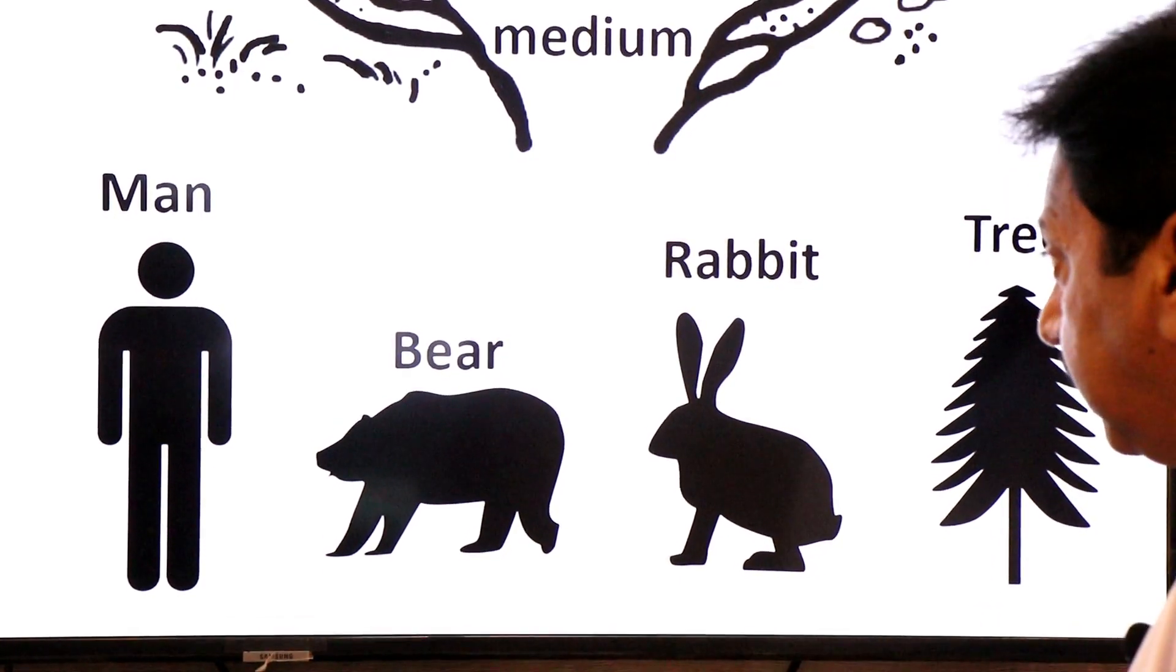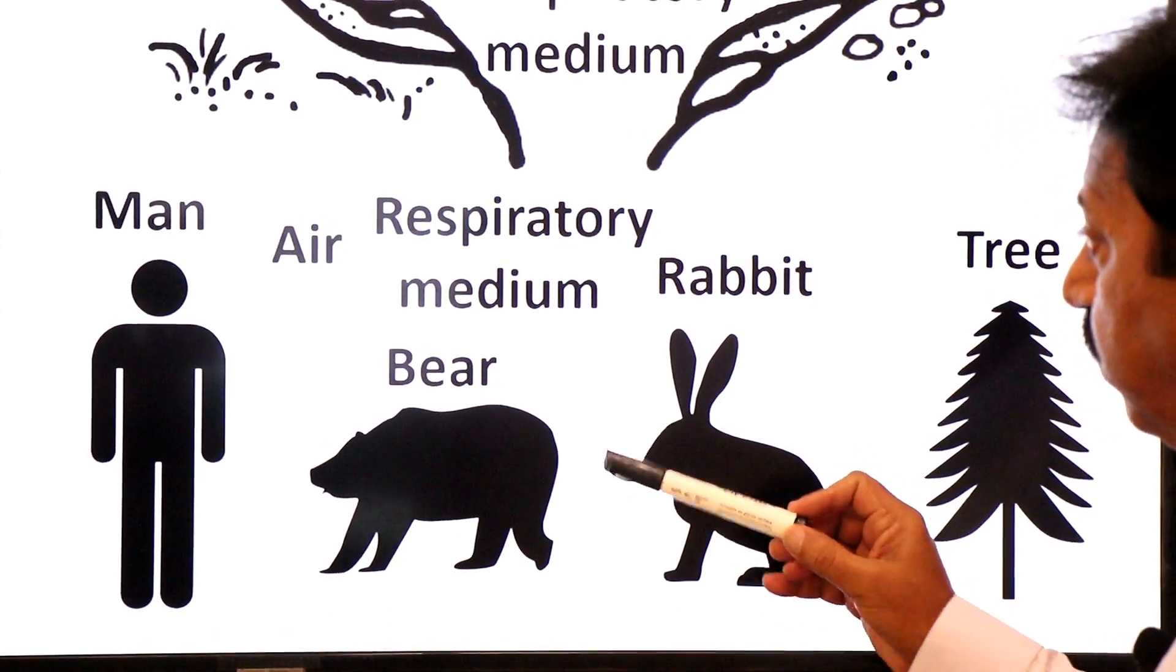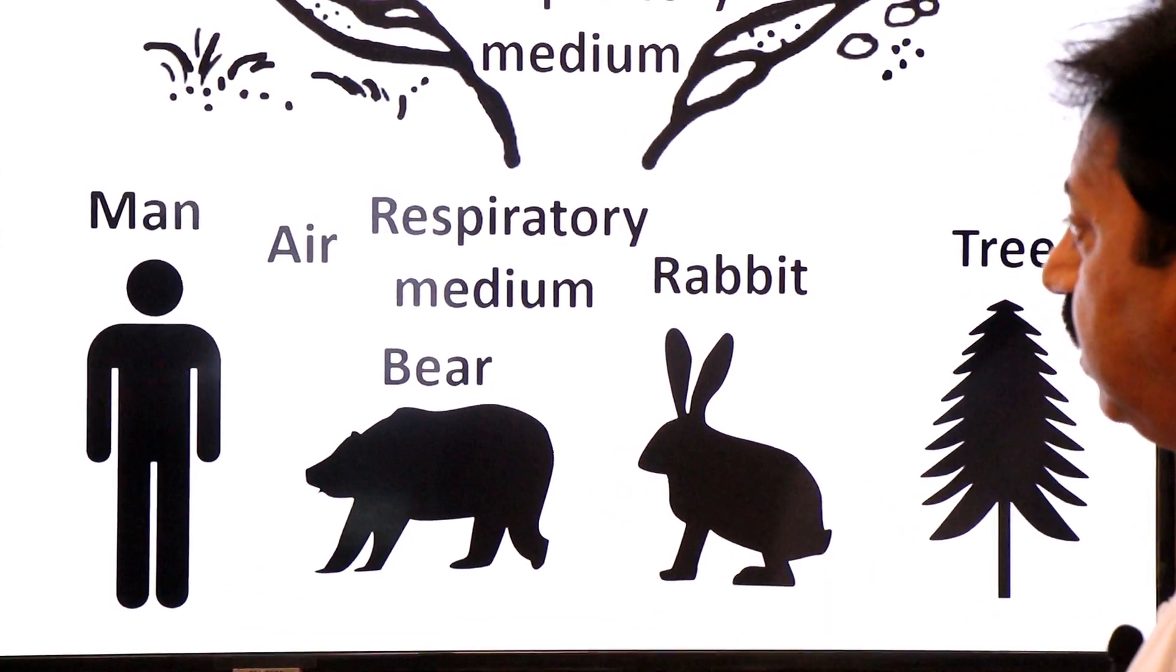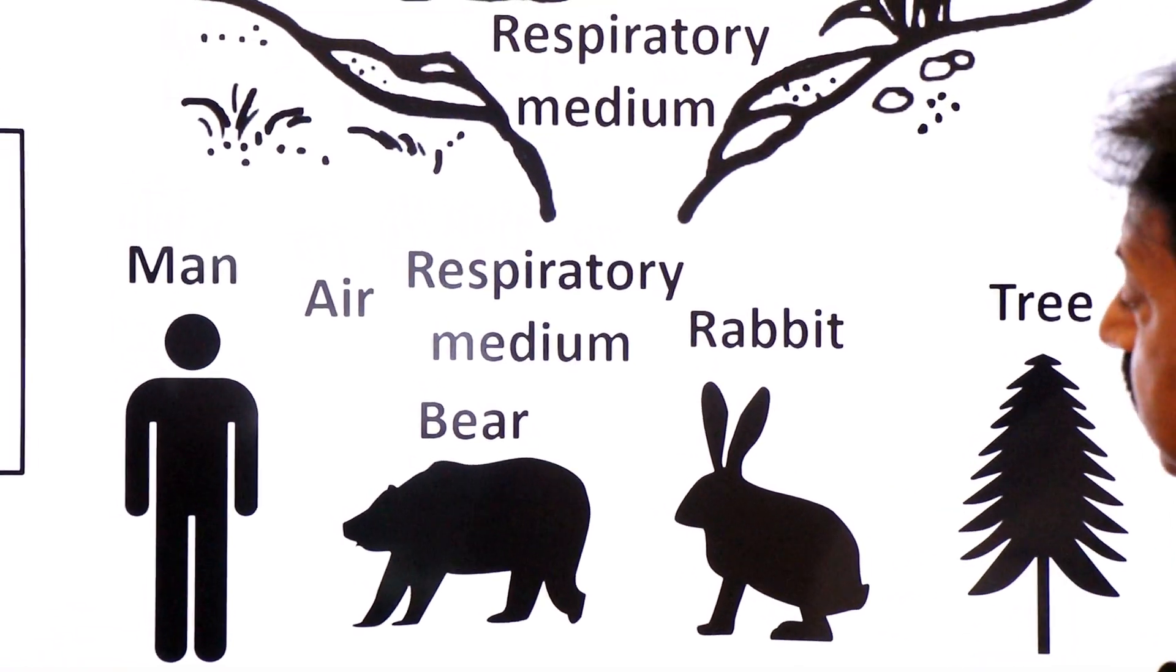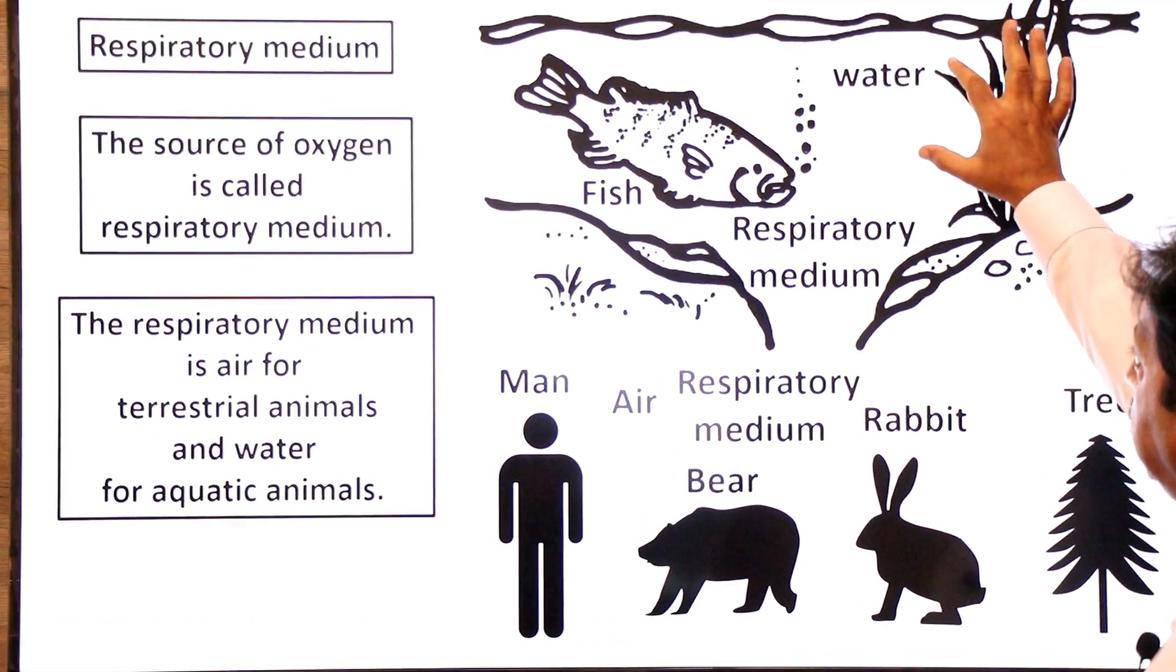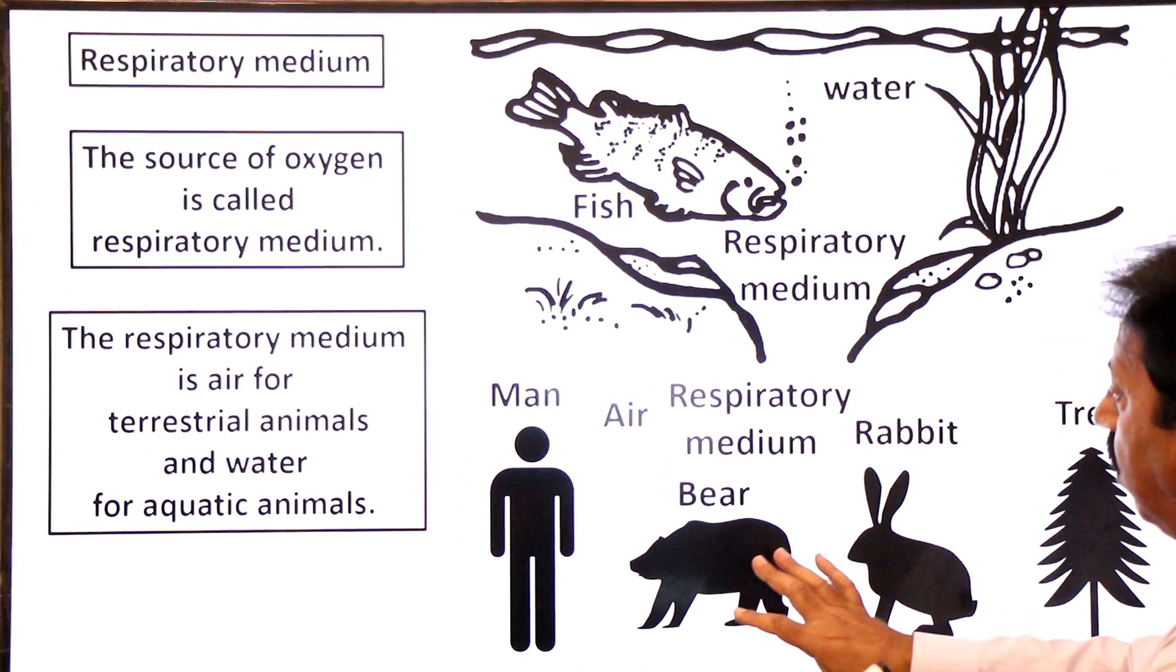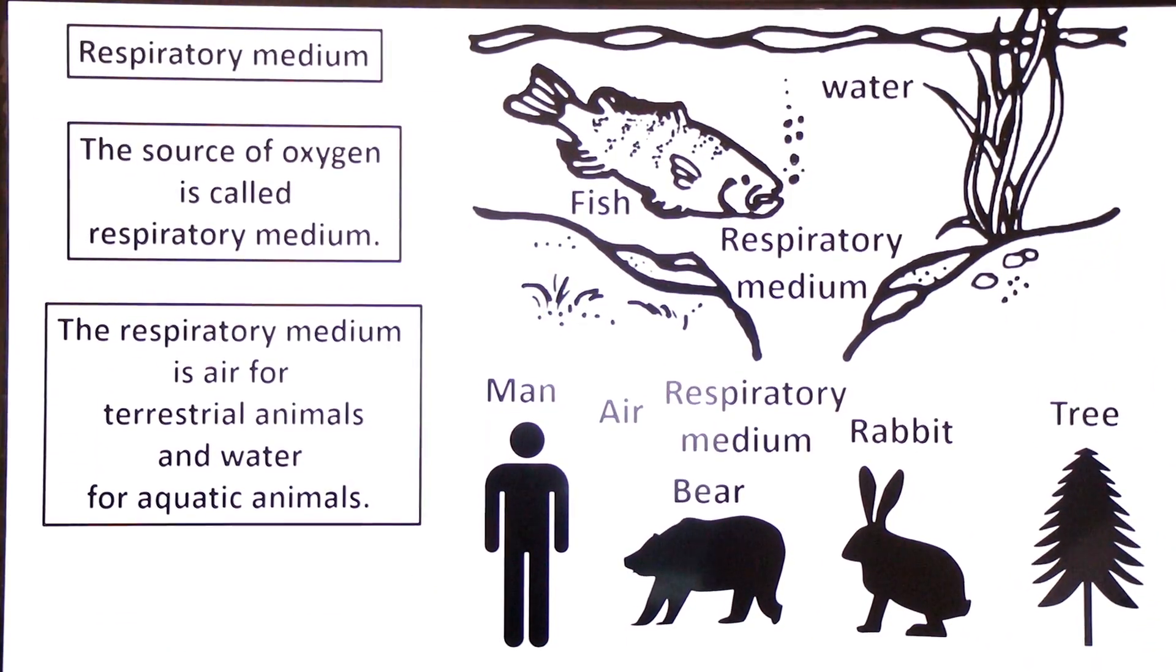So air is respiratory medium not only for animals but also for plants. You can see two respiratory mediums: for aquatic animals, the respiratory medium is water, and for terrestrial animals, the respiratory medium is air. Please focus on the whole slide.